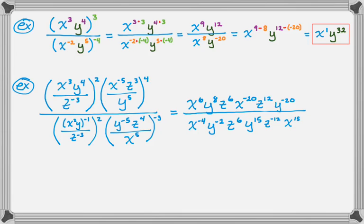Now I have a numerator and a denominator each with lots of x's, y's, and z's. I'm going to clean up just the numerator: x to the 6th and x to the negative 20th — multiplied, so I add the exponents — giving x to the negative 14th. y to the 8th and y to the negative 20th add to give y to the negative 12th. z to the 6th and z to the 12th add to give z to the 18th. That's just the numerator.